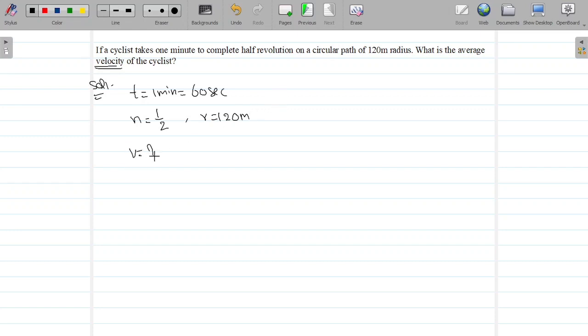What is the average velocity? What is the velocity formula? Displacement by time. Average velocity means displacement by time, or total displacement by time. What is the total displacement here?